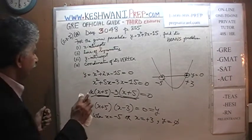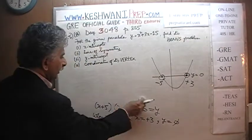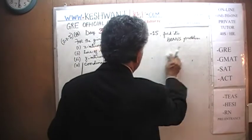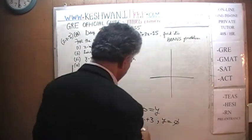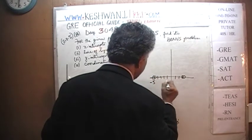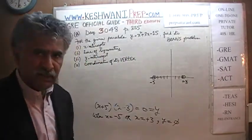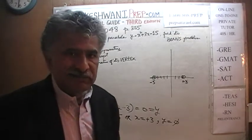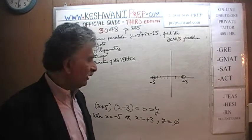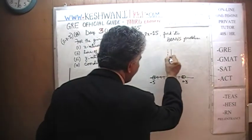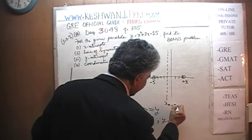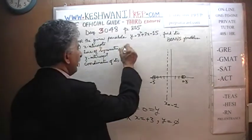Let's move on and find the line of symmetry. We have our x-intercepts at positive 3 and negative 5. From negative 5 to positive 3, we can clearly see it's a distance of 8 units. Therefore, the line of symmetry is going to be 4 units from either end. If you go 4 units from negative 5, you get negative 1. Or going 4 units back from positive 3 — positive 3, 2, 1, 0, negative 1 — there you go. x equals negative 1 is our line of symmetry.